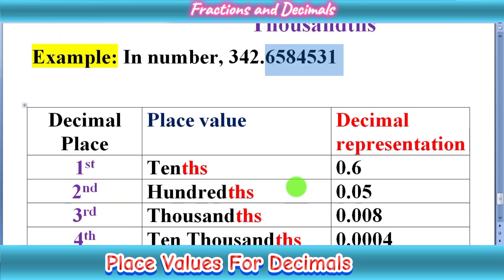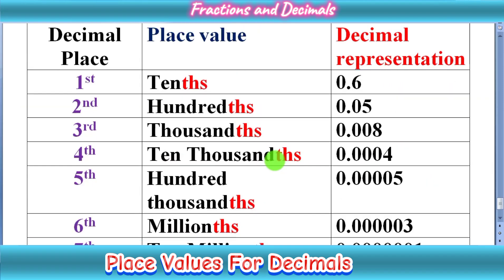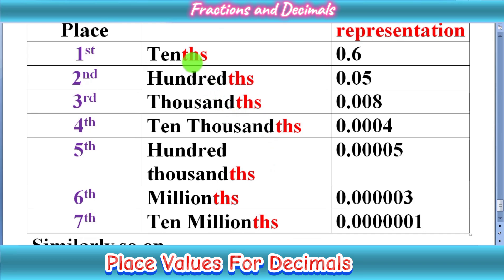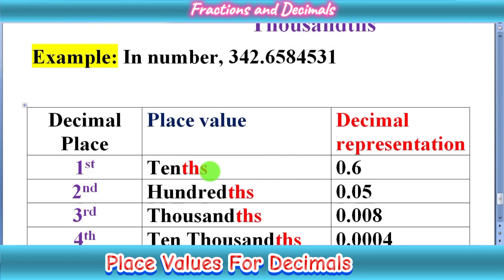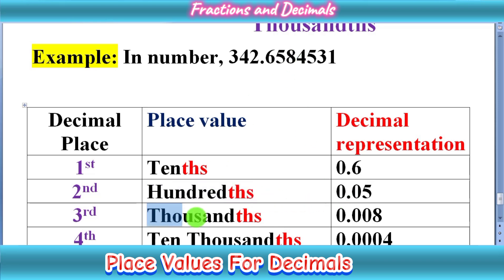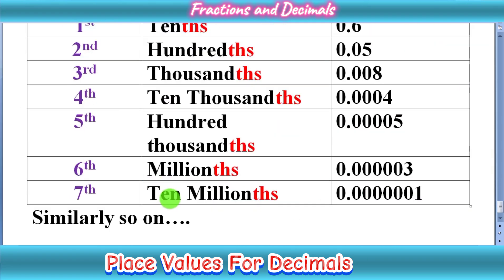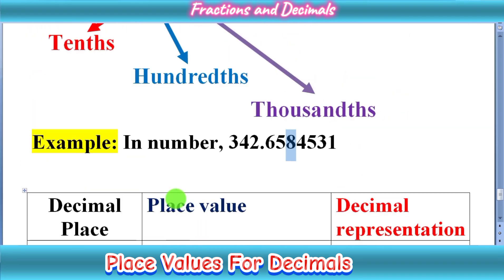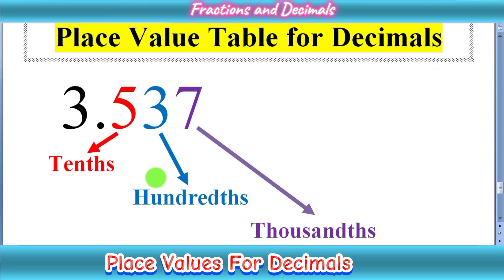So this is the basic concept of place values in decimals. In decimal we start from tenths. Some important points to note: in decimal places, every place value ends with three letters T-H-S. It means that we have a part. Tenths means we can divide six by ten — six out of ten. Hundredths means five upon hundred — we have a total of hundred parts and we have taken out five parts. Thousandths means we have a total of one thousand parts of something and we have eight out of one thousand.